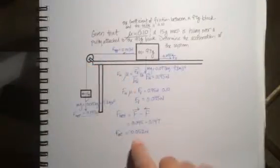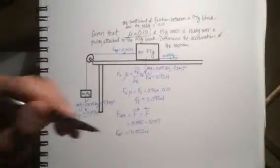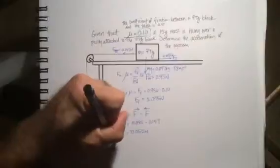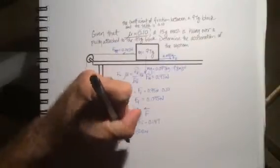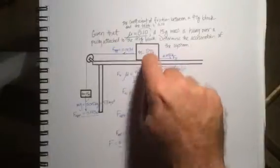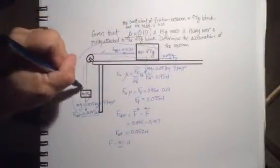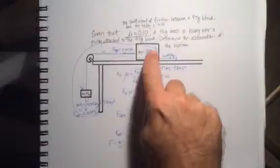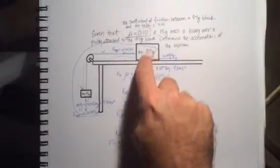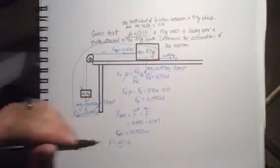Our net force is negative 0.052 newtons, which means it's pulling to the left. Now applying Newton's second law, F equals M times A. The tricky part is that all of this is accelerating together, so we have to consider the 97 grams plus the 15 grams as our total mass.